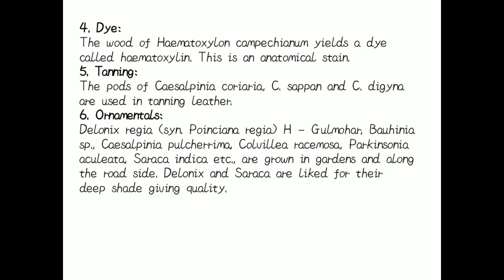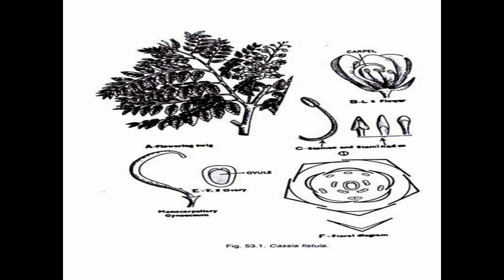The wood of Haematoxylum yields a dye called haematoxylin, which is used as an anatomical stain. The pods of Caesalpinia are useful in making tanning leather. Gulmohar and Bauhinia species are also used as ornamental plants.